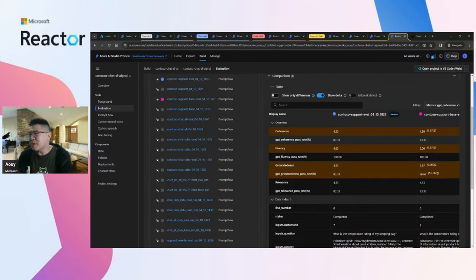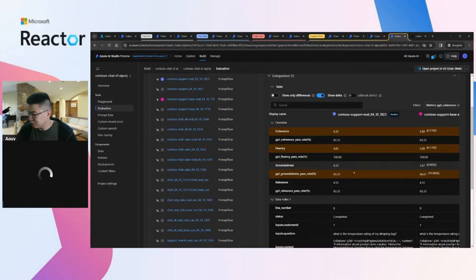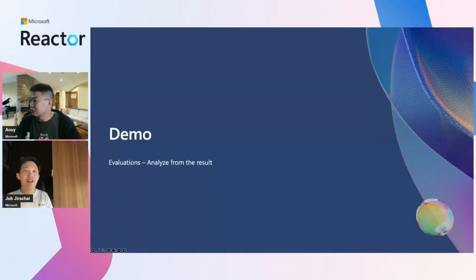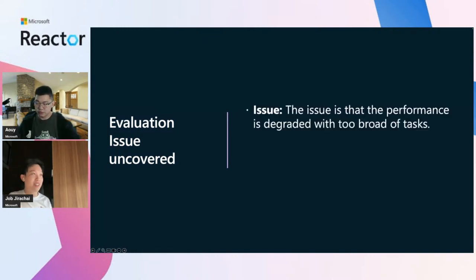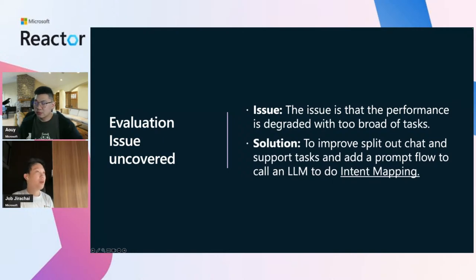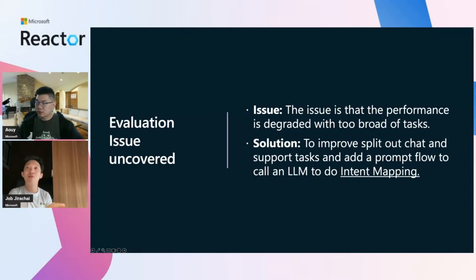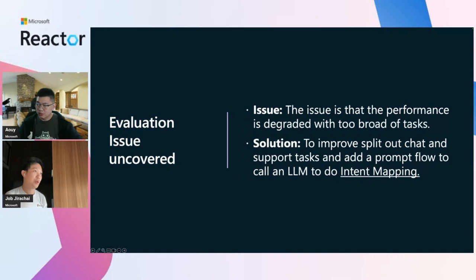That's how we uncover the issue and create a new flow to fix it. Each flow can be separated by folder so you don't mix them up. Each component you can do versioning as mentioned before. To summarize: the evaluation results revealed two issues. First, performance decreased when handling both sales and support tasks — so we split the single chatbot into two separate flows using intent classification. Second, the model needed more normalized questions — so we added a component to rewrite and standardize questions using the ADA model before sending them to GPT-3.5 Turbo.